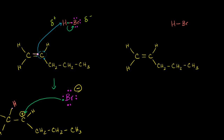So let's draw a mechanism for that and think about which one is more likely to actually happen. Once again, this is the bromine with seven valence electrons and the hydrogen with its electron right there. This is partially positive and this is partially negative. The hydrogen might want to swipe one of these electrons — let's do it from this carbon right here.